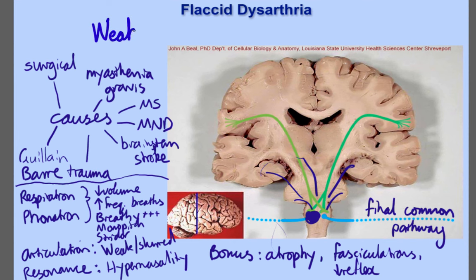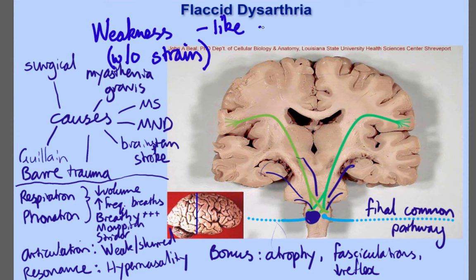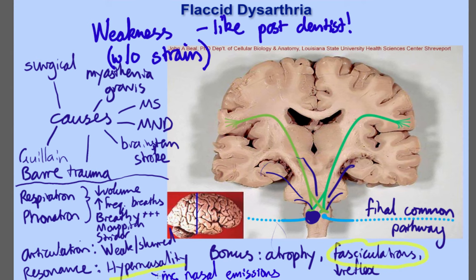To summarize: flaccid dysarthria is characterised by weakness — you're looking for weakness without strain. A non-technical shortcut: imagine someone who's been to the dentist and had injections making their articulation weak — then imagine the same thing in the pharyngeal and laryngeal muscles. Key shortcuts to help you are fasciculation and hypernasality with nasal emissions. If someone comes into your clinic with dysarthria and no clear cause, do a thorough evaluation and send them to a neurologist, because dysarthria that's gradually getting worse can be very, very serious.